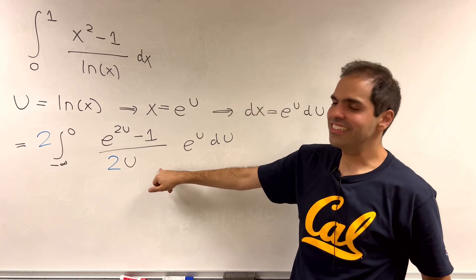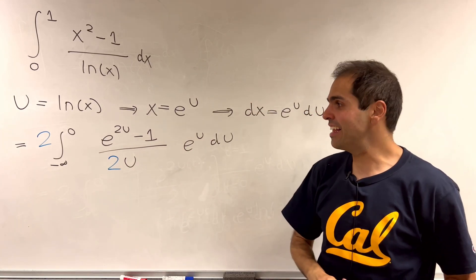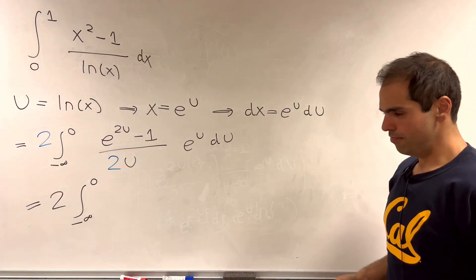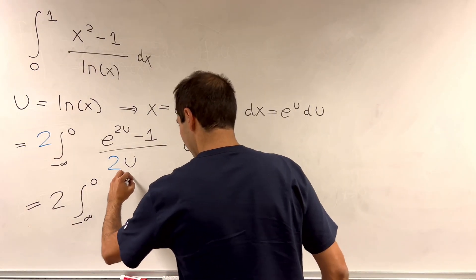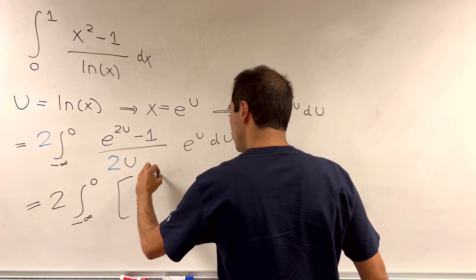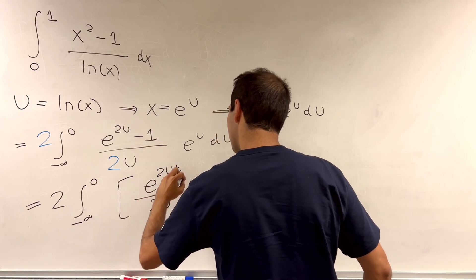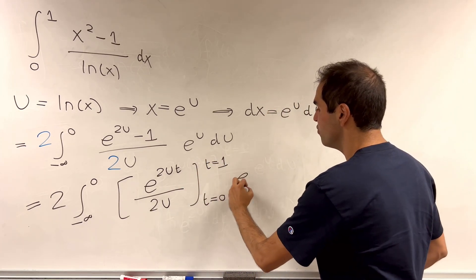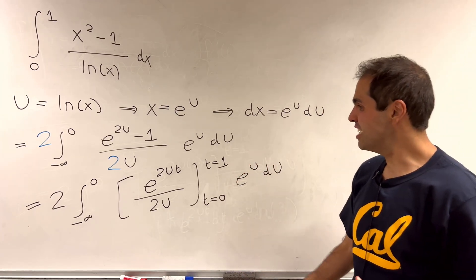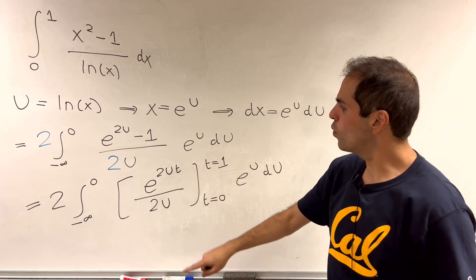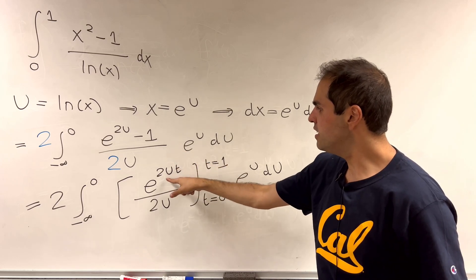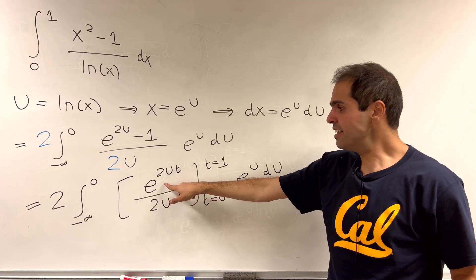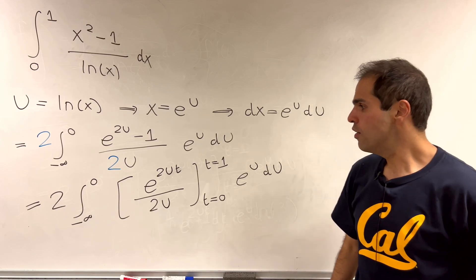And the reason for this is that now you can recognize this left side as a certain antiderivative. Because this just becomes 2 times integral from minus infinity to 0 of e of 2ut over 2u from t equals 0 to t equals 1 times e of u du. Kind of reverse engineering this because if you plug in t equals 1 here, you get e of 2u. If you plug in t equals 0 here, you get 1. But this is precisely an antiderivative of e of 2ut with respect to t.